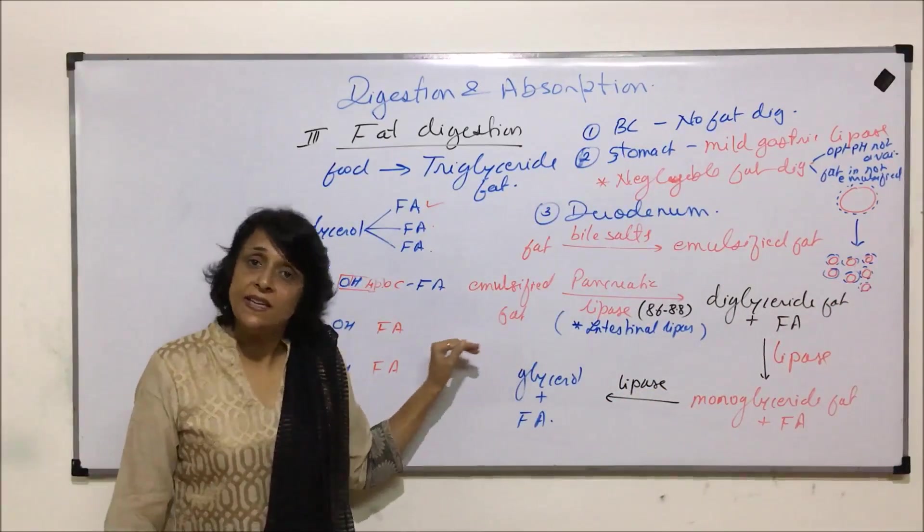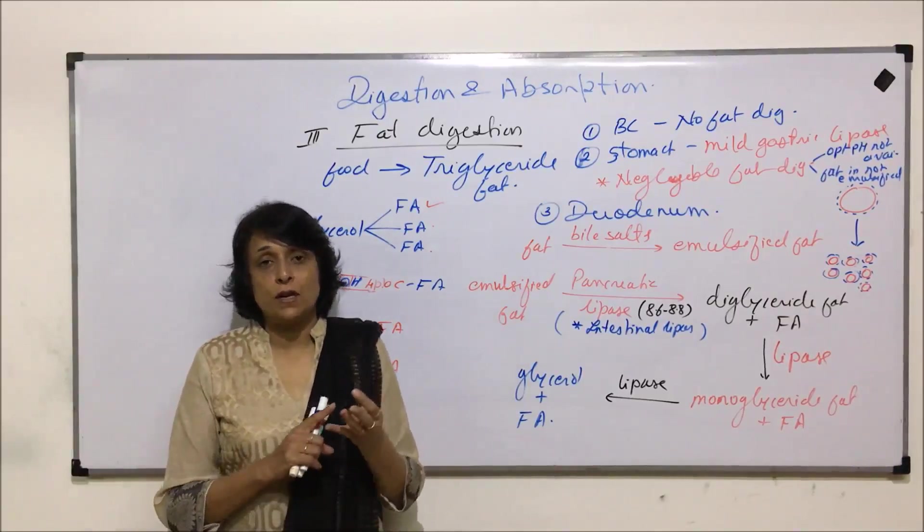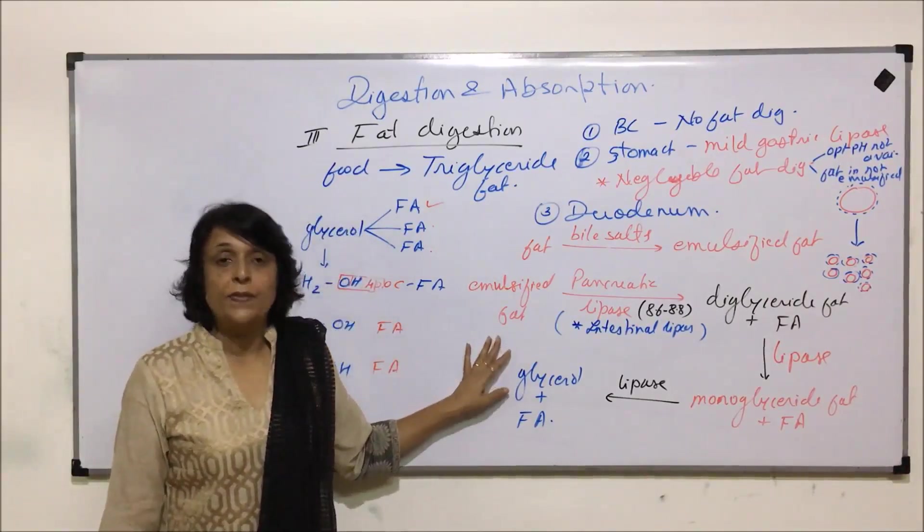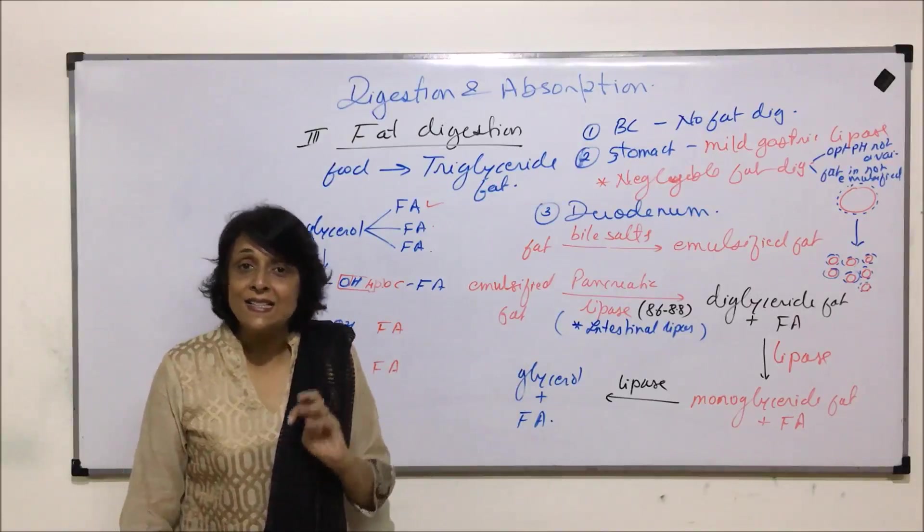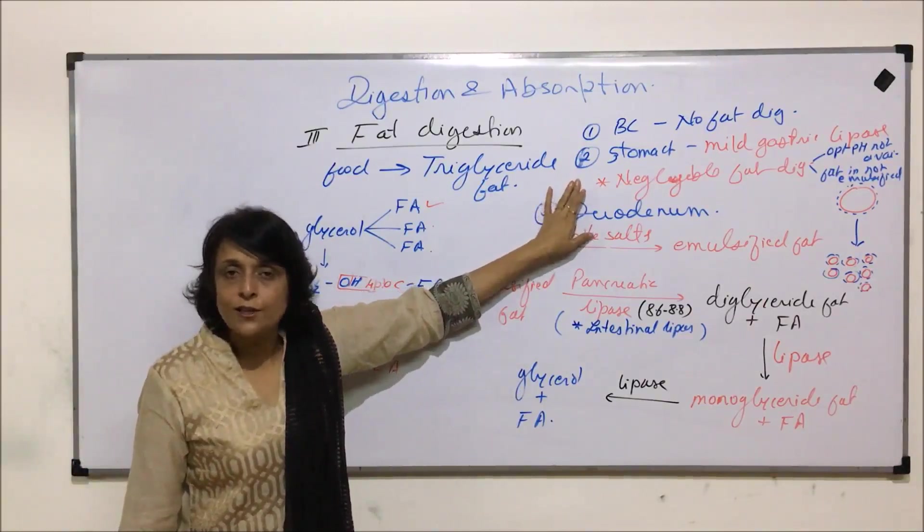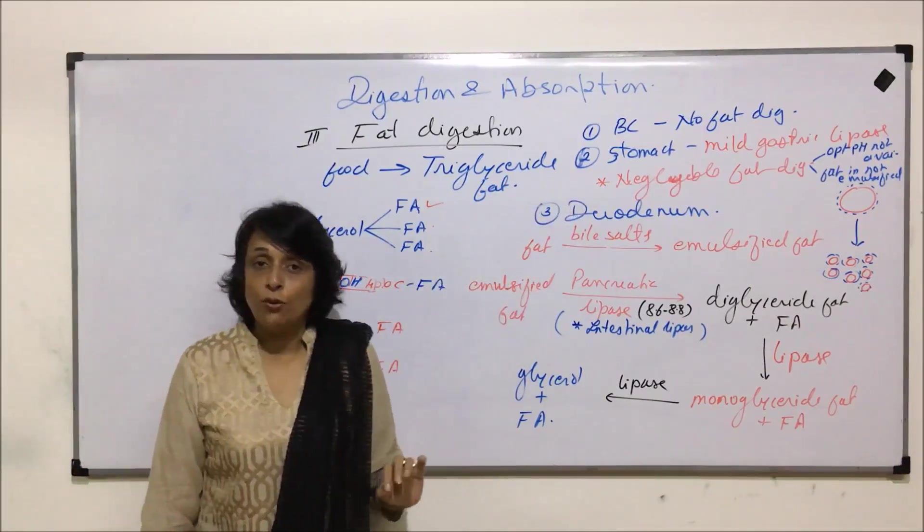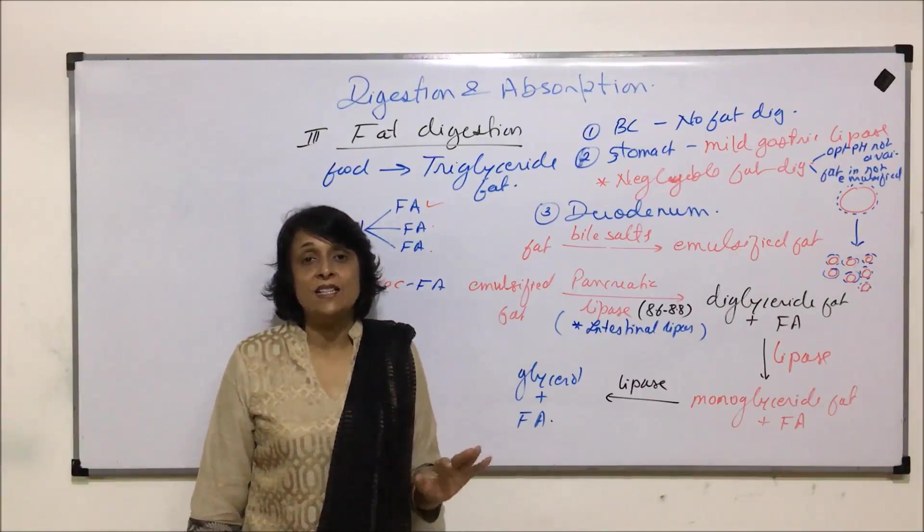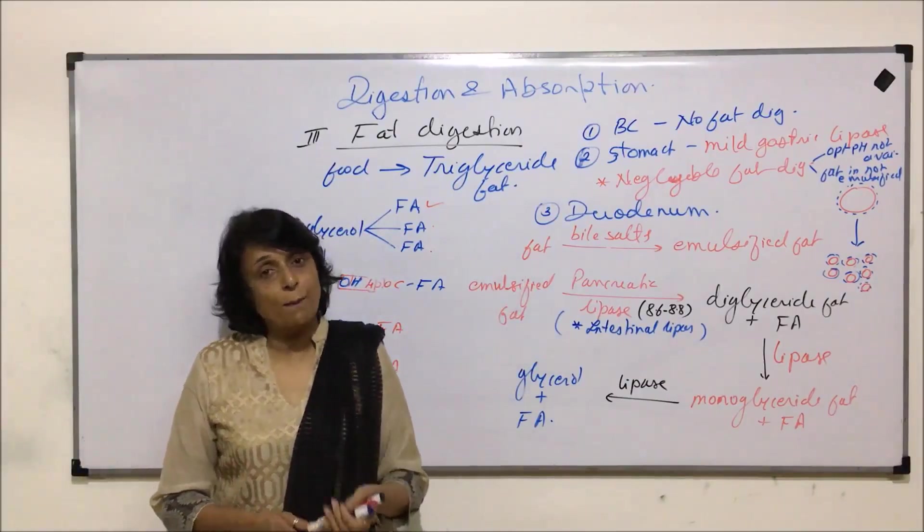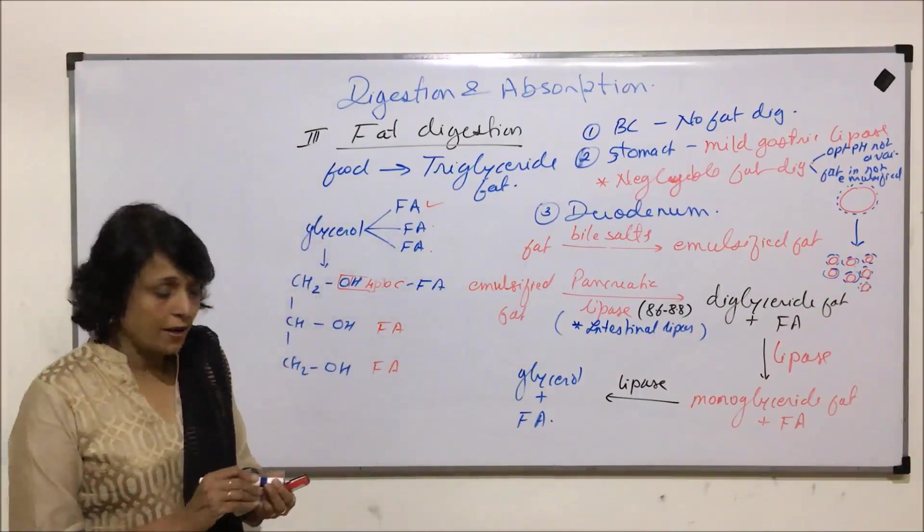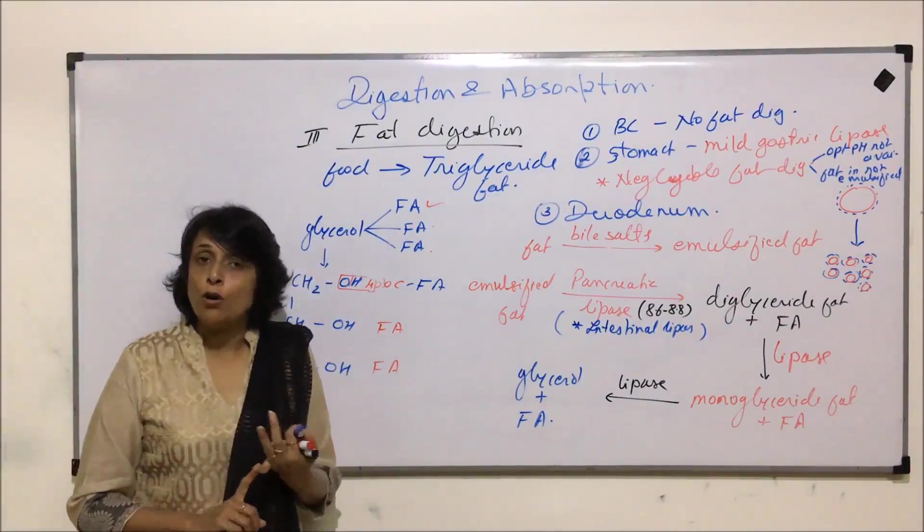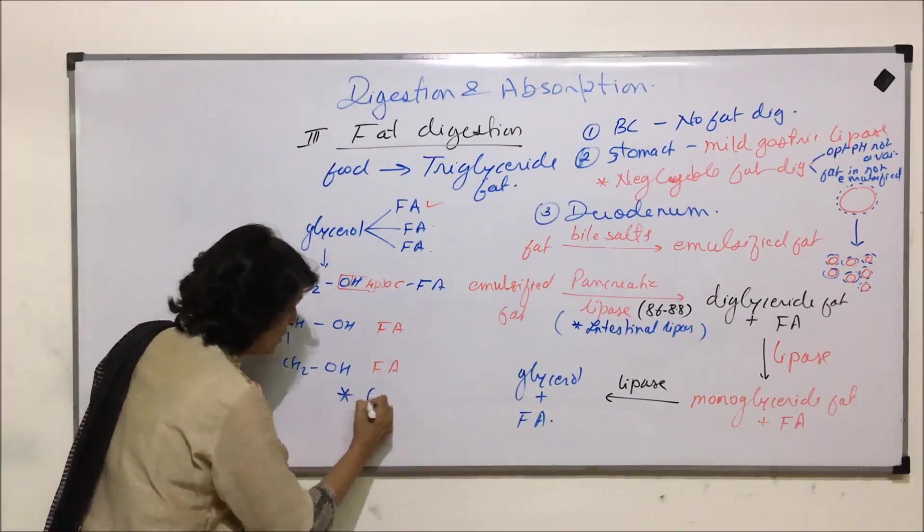Complete digestion of fat takes place in duodenum only. When we talked of carbohydrate, the digestion started in buccal cavity and ends in duodenum. In case of protein, digestion starts in stomach and ends in duodenum. Here it starts in stomach, though negligible, and ends in duodenum. That means the complete digestion takes place in duodenum. Here we will add one more term. We have talked of bolus, we have talked of chyme. Here we will take one more word which is called chyle.